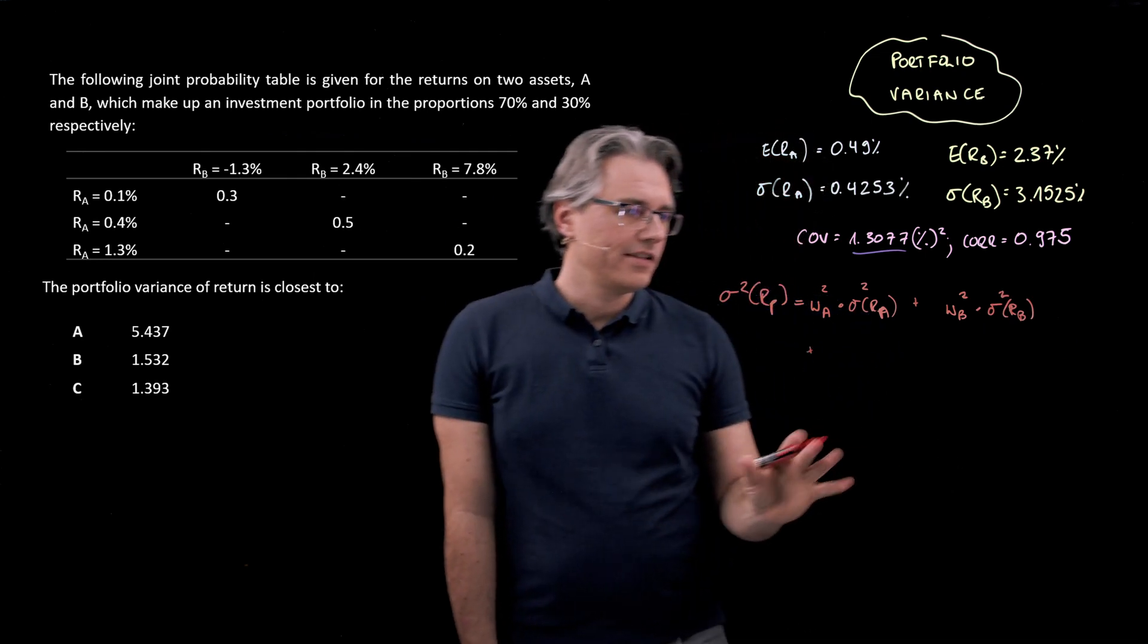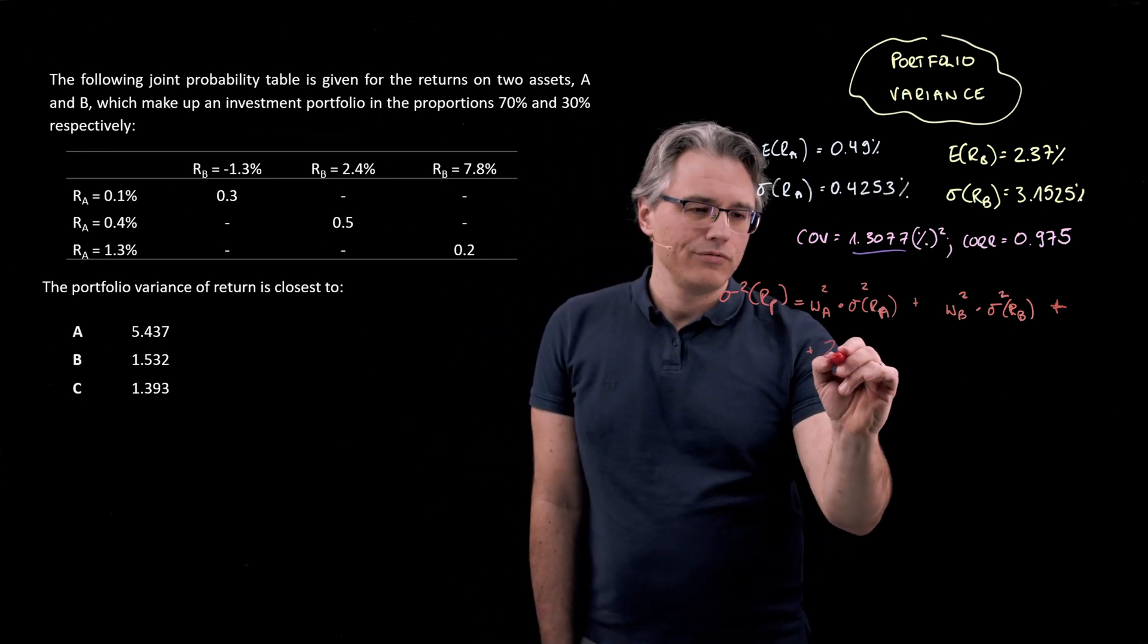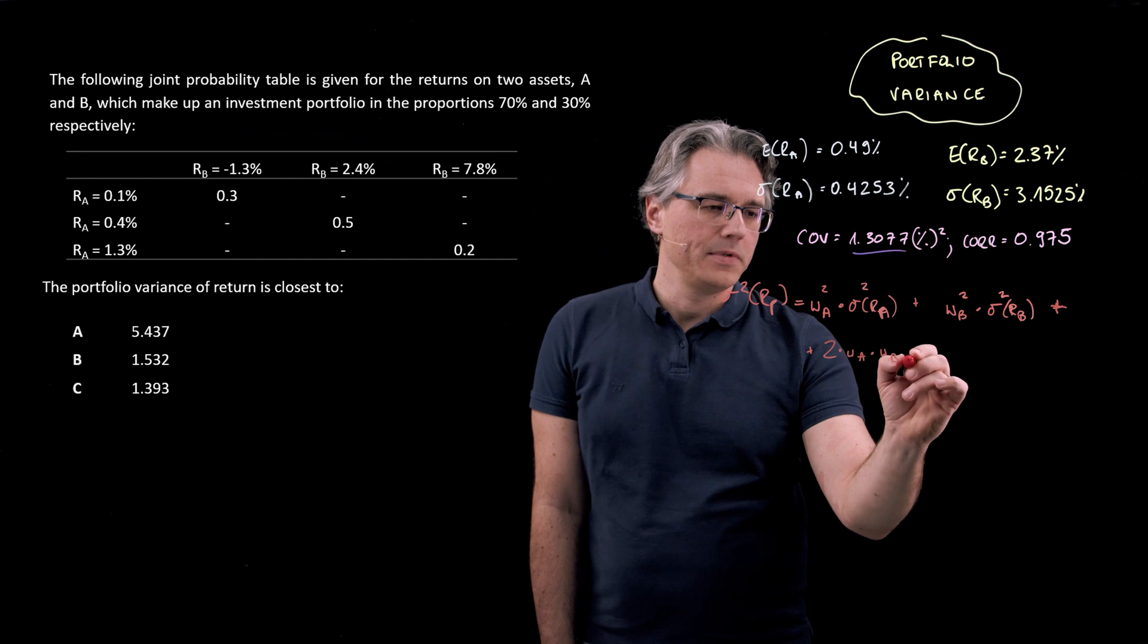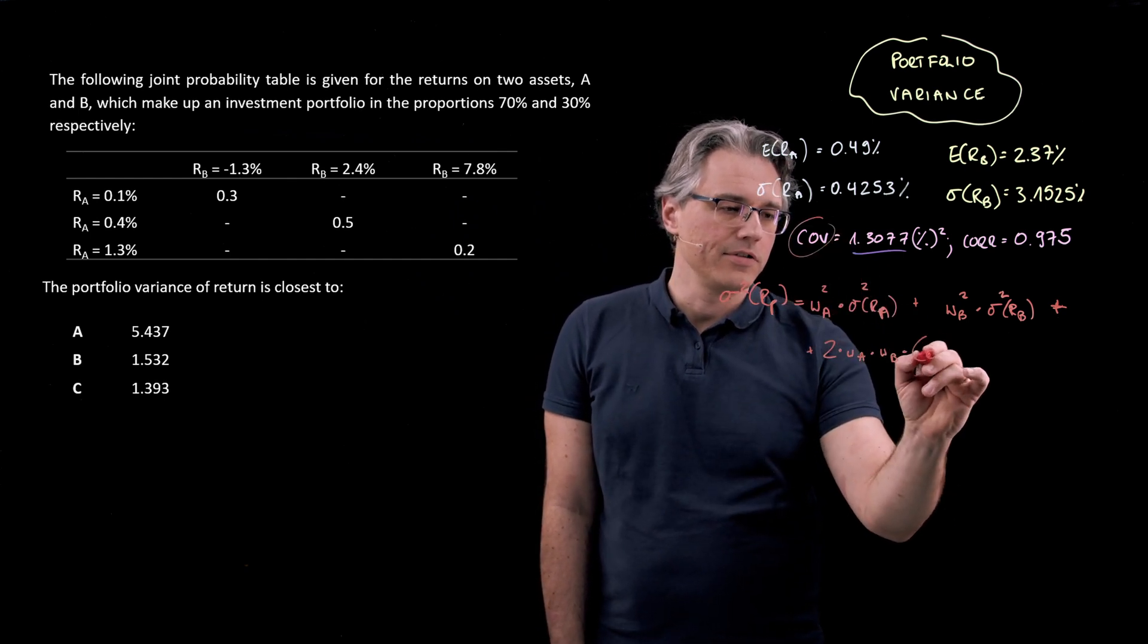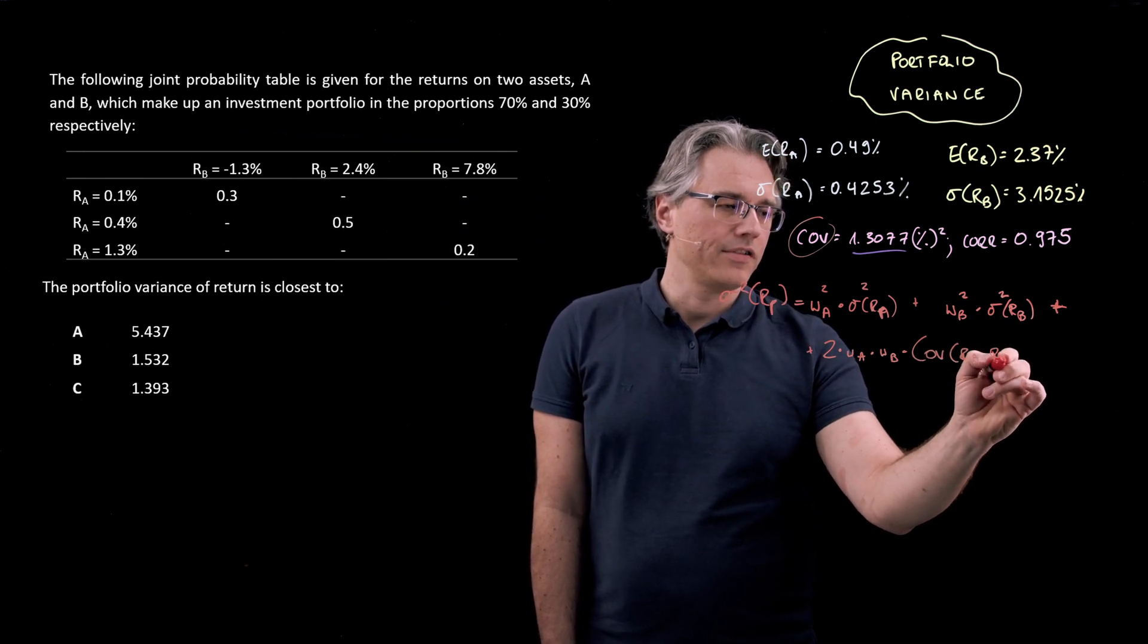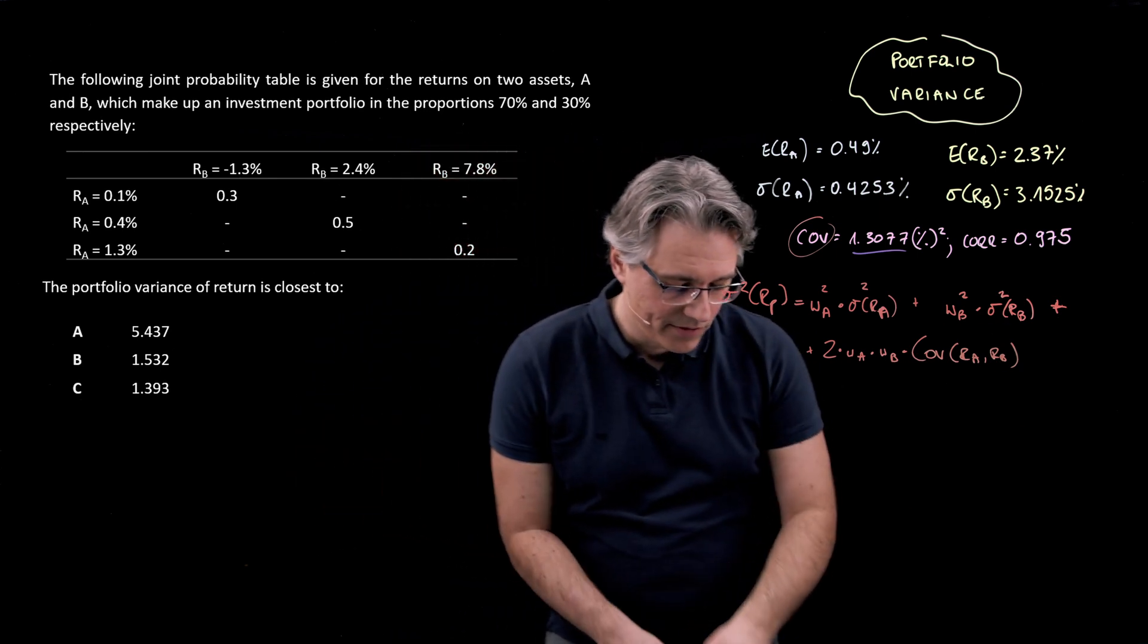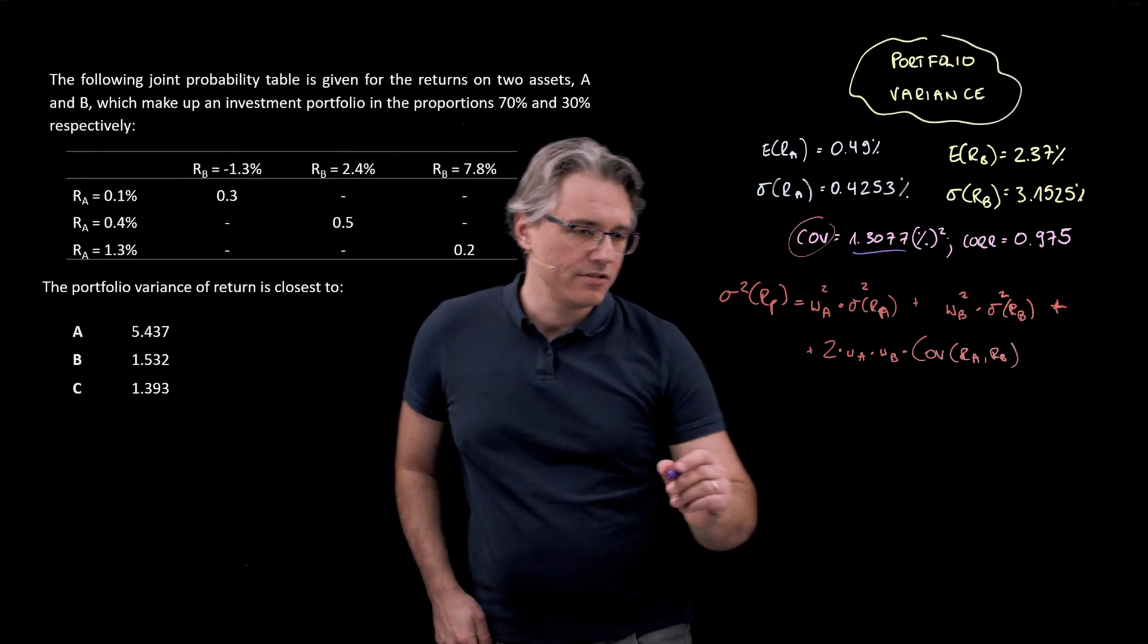And then, that's not over, we still have a third component: two times the weight of A times the weight of B times, and now critically, their covariance of returns. So the cov of return A versus return B. This is a formula I strongly suggest you know, that you commit to memory. You may be asked to perform computations based on it.